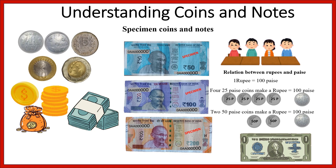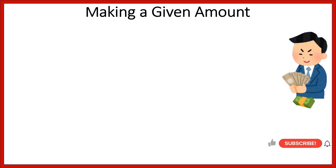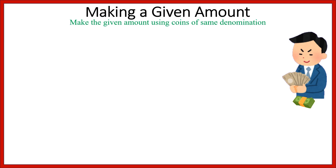Here is an activity for you: observe some coins and notes and write down what you see on each one. Now, making a given amount — as I said before, we shall use only one currency to avoid confusion. You can imagine it to be your country's currency. Numerically they are the same though their exchange values are different and also keep changing. You will learn more about that in higher classes. Make the given amount using coins of the same denomination.